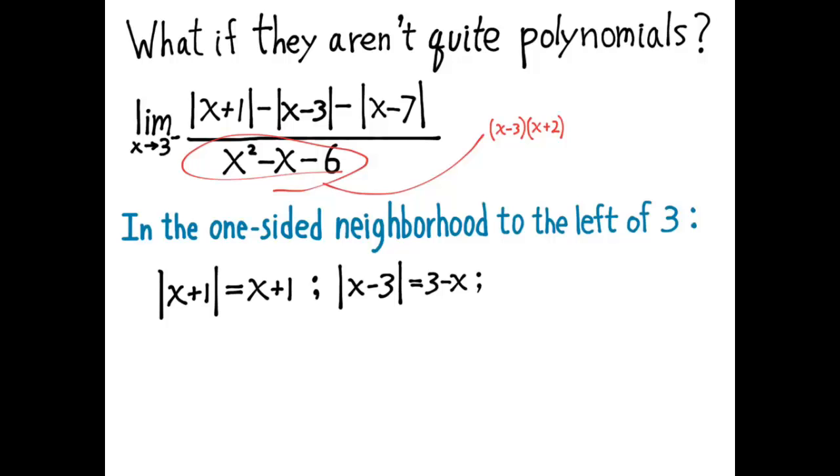And the absolute value of x minus 7 in that neighborhood is equal to 7 minus x, because x minus 7 is a negative number in that neighborhood.